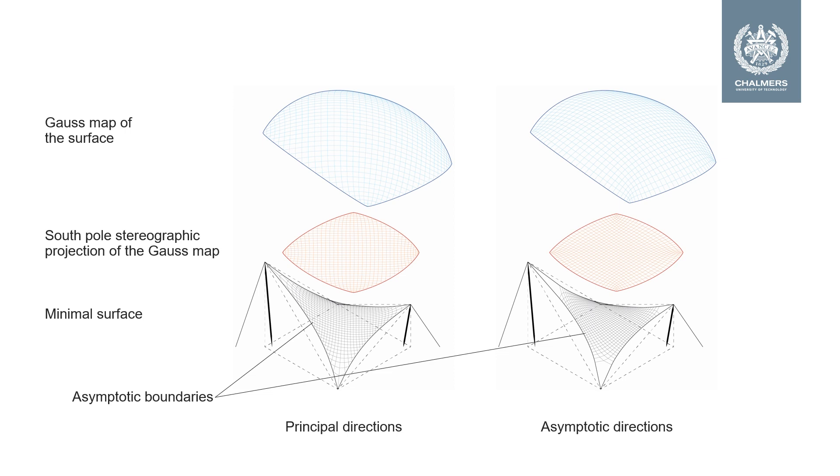The left and right cable net roof share the same underlying minimal surface, and their images under the Gauss map and the stereographic projection of the Gauss map are similar to one another except for the orientation of the interior grid.